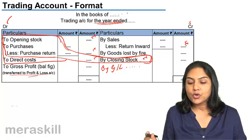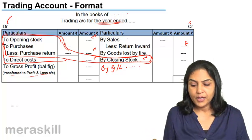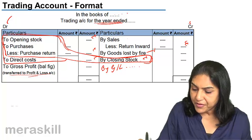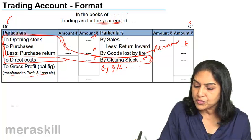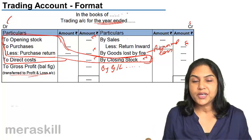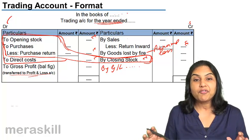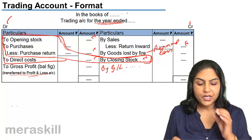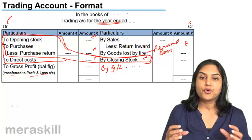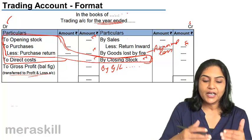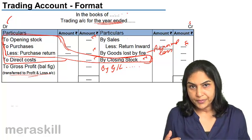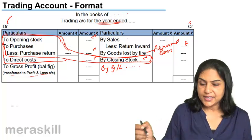We have one more item here: goods lost by fire. When goods are lost by fire, or there is any other kind of abnormal loss of goods, that abnormal loss is brought to the credit side of the trading account, because we want to find out the gross profit by comparing goods sold with the cost of goods sold. If goods have been lost by fire, they cannot be included as part of the purchase cost, so we remove them from the cost of goods sold. We shall discuss this again in detail.